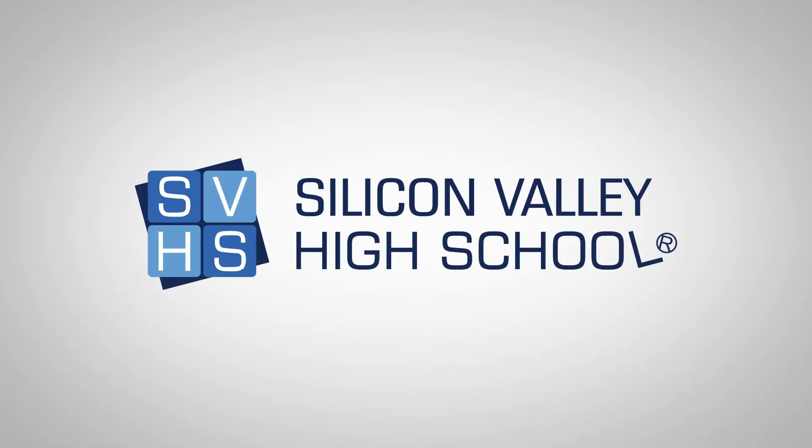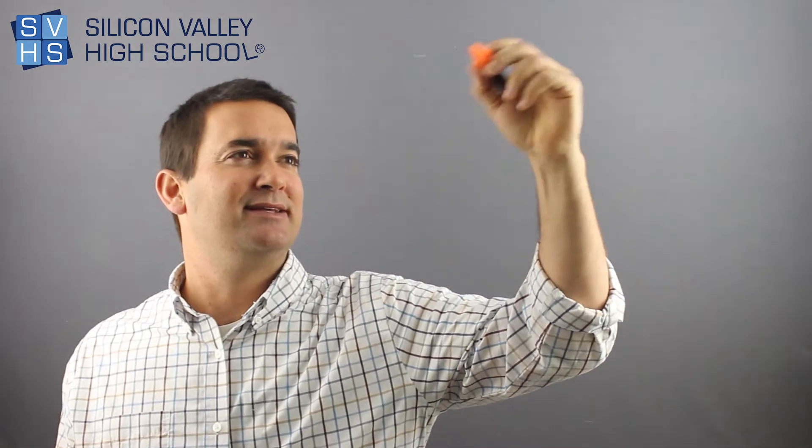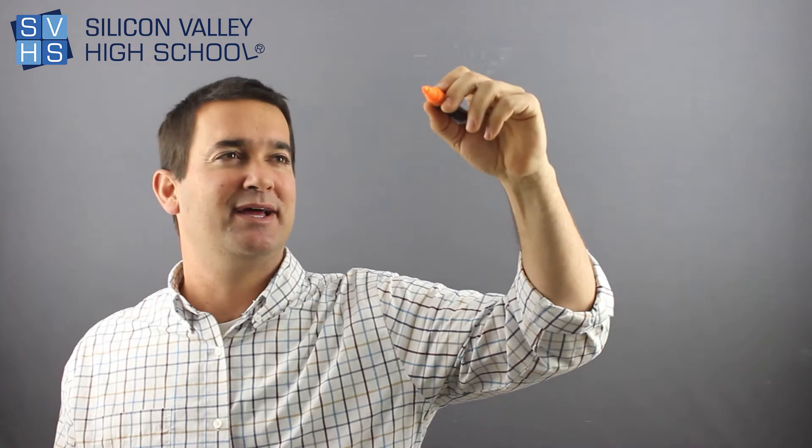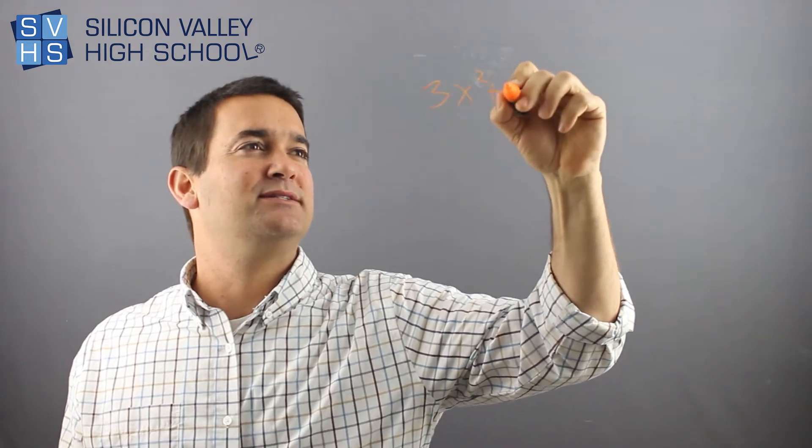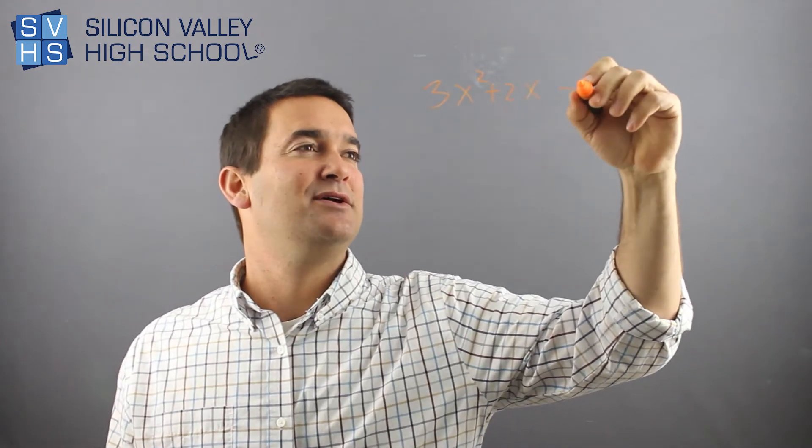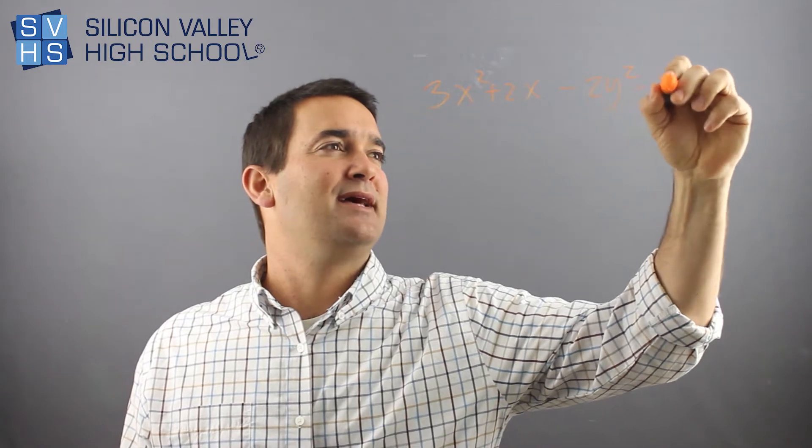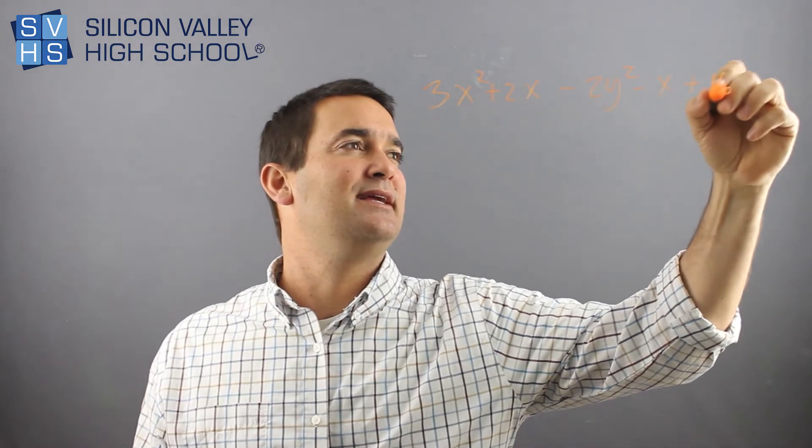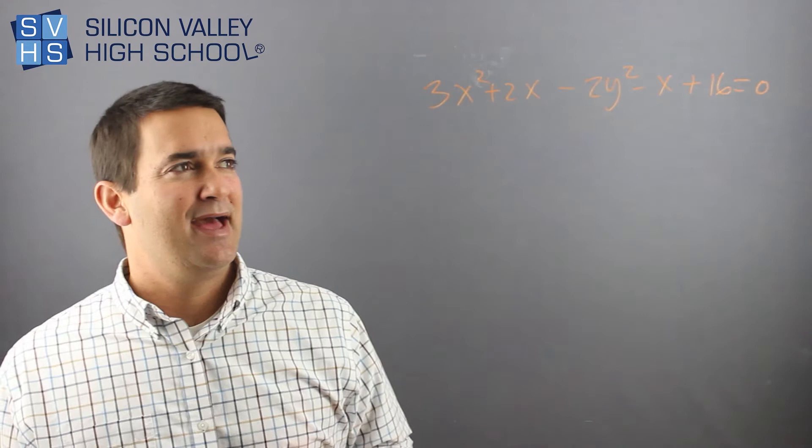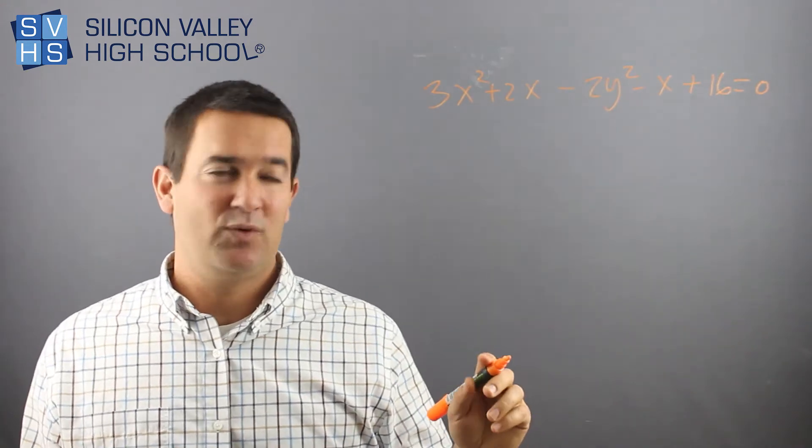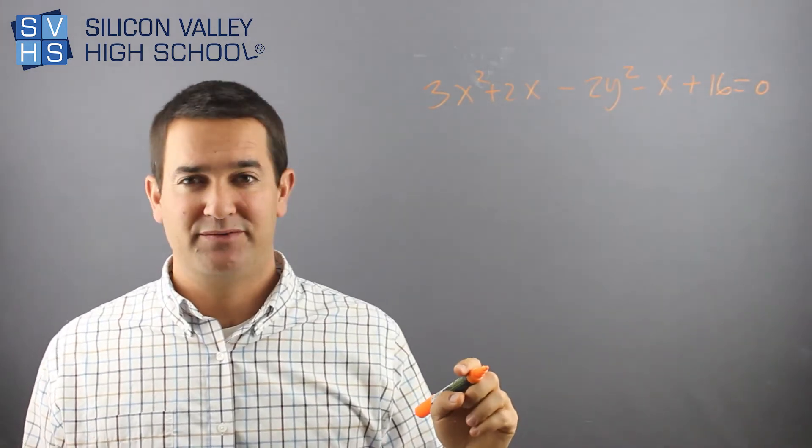So a typical question in an Algebra 2 class would be something like this. You'll have some crazy equation like 3x squared plus 2x minus 2y squared minus x plus 16, whatever, equals 0. And they'll say, what is this? What type of graph does this equation represent?